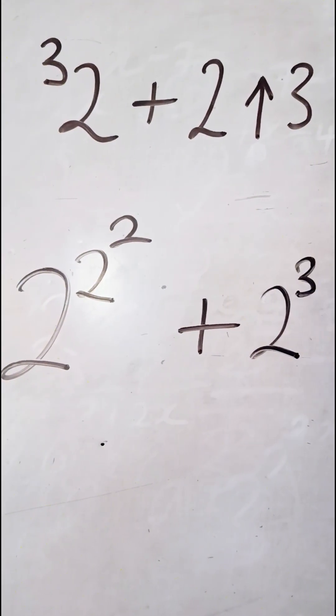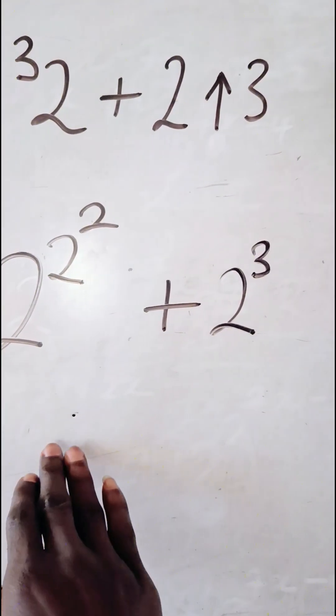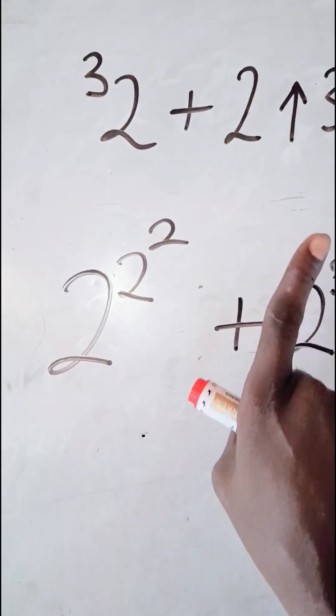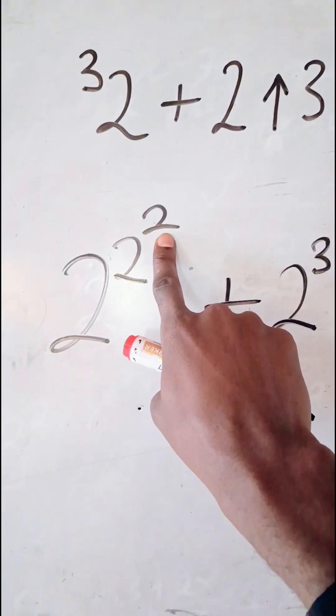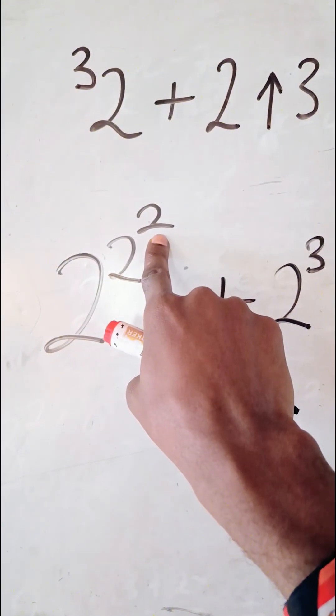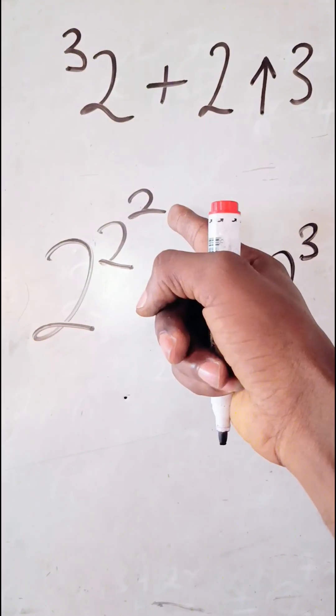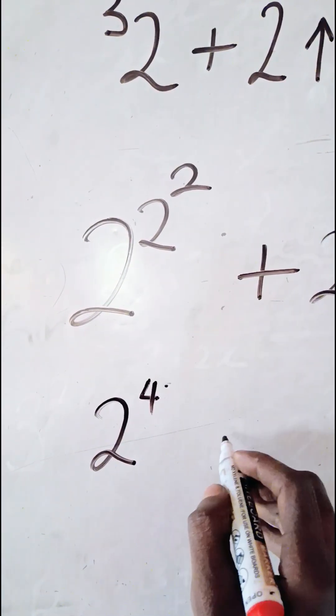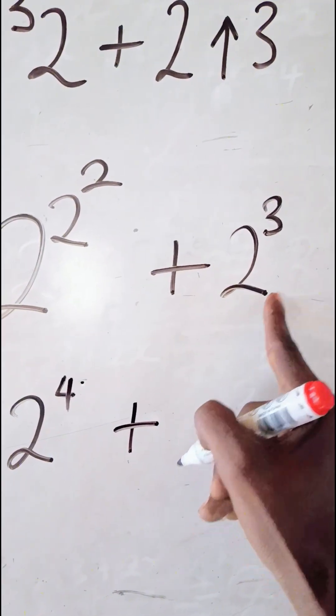So now when you see something like this, you start solving from up down, not from down up. Start solving from up down. So look at this, two to the power of two is the same as four. So we are going to be having two to the power of four plus two to the power of three.